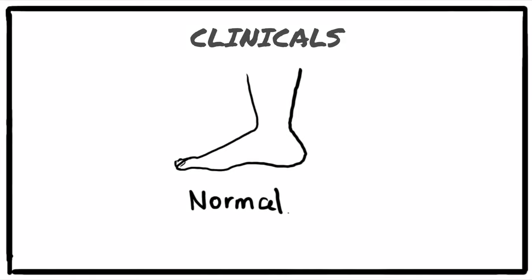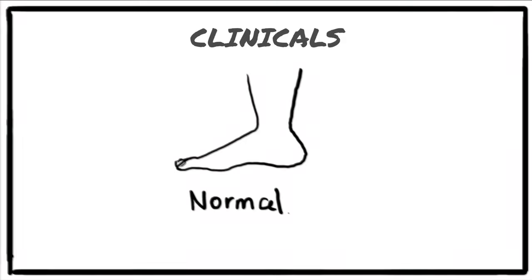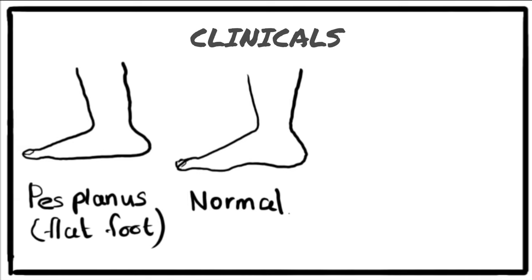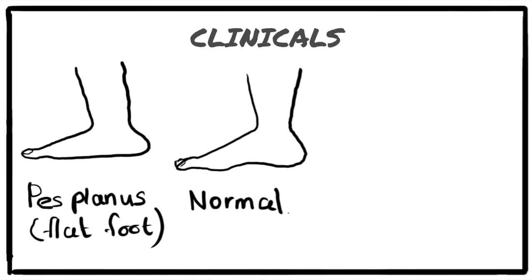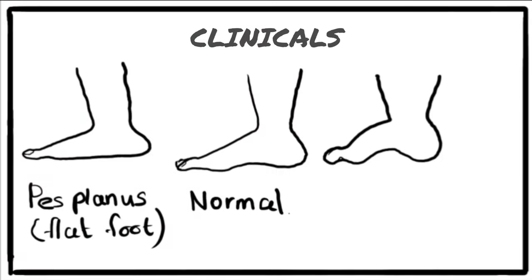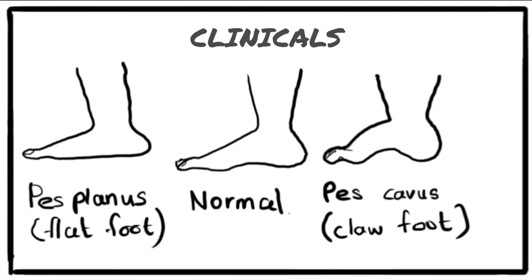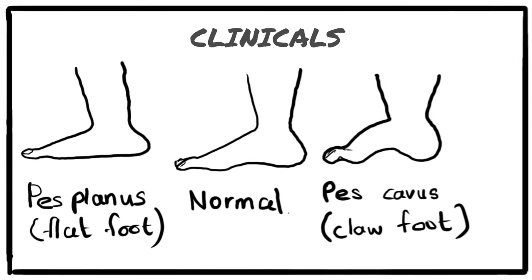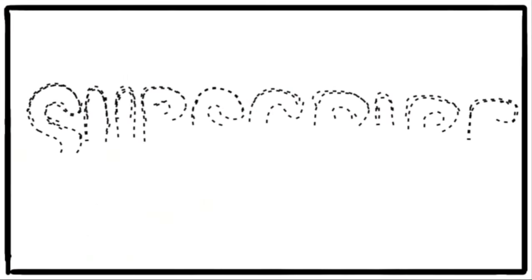And now let's discuss some clinicals related to this topic. Pes planus is the absence or collapse of the foot leading to a flat foot, which may be congenital or acquired. This leads to a clumsy shuffling gait. People with flat foot are more liable to osteoarthritis and trauma. Pes cavus is an exaggeration of longitudinal arch of the foot. Atrophying of the lumbricals and the interossei cause claw foot. Spina bifida and poliomyelitis are causes for pes cavus.